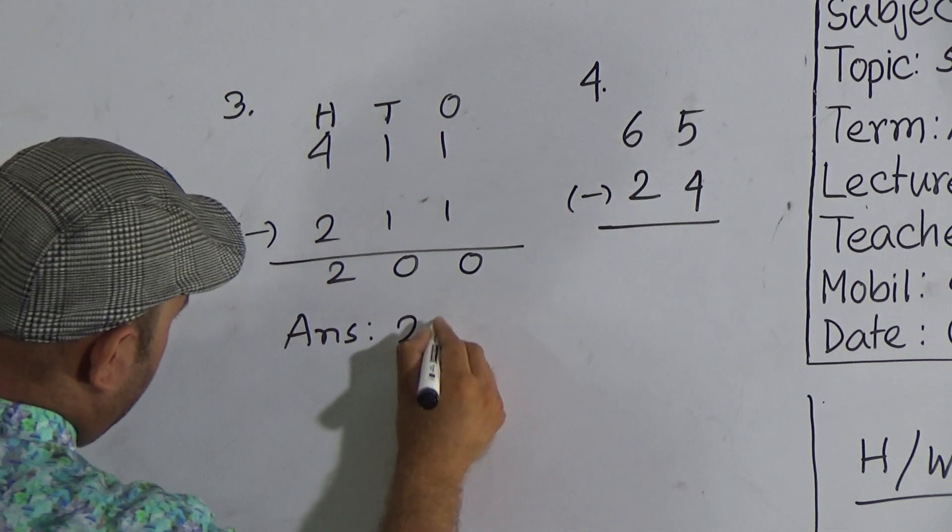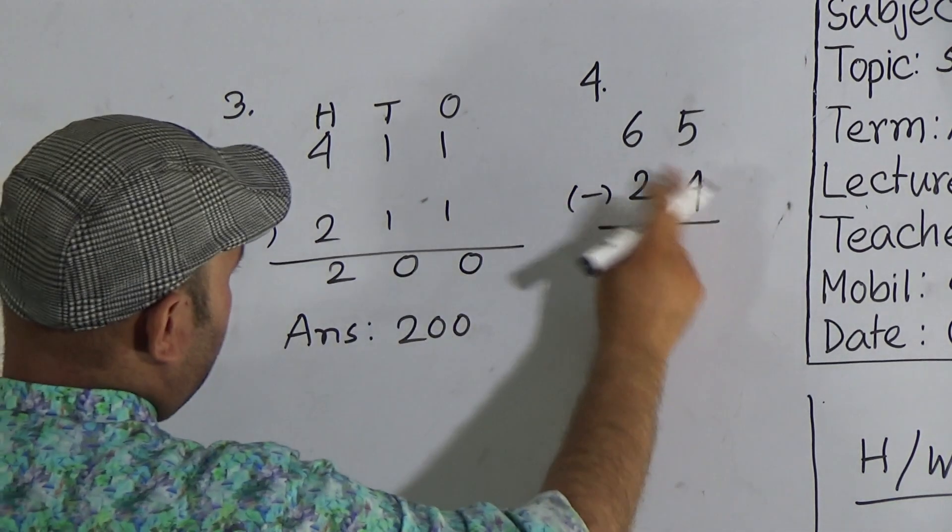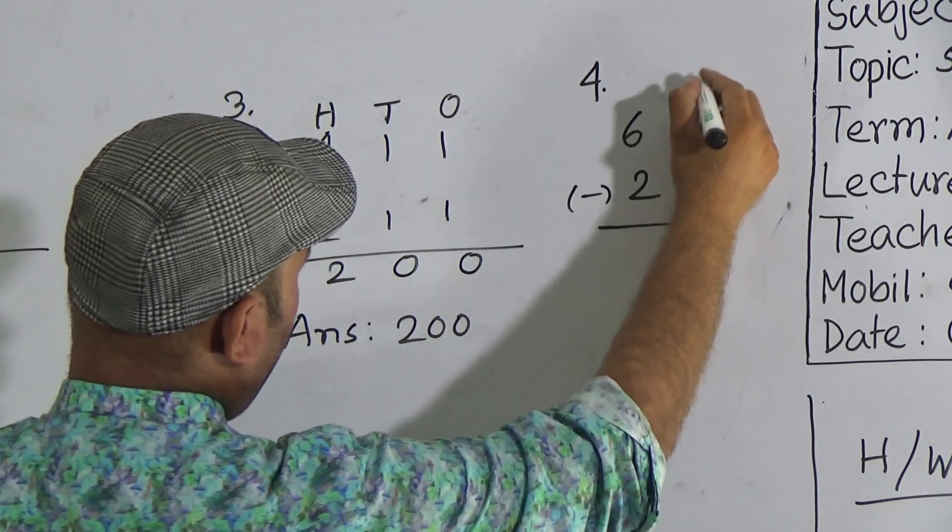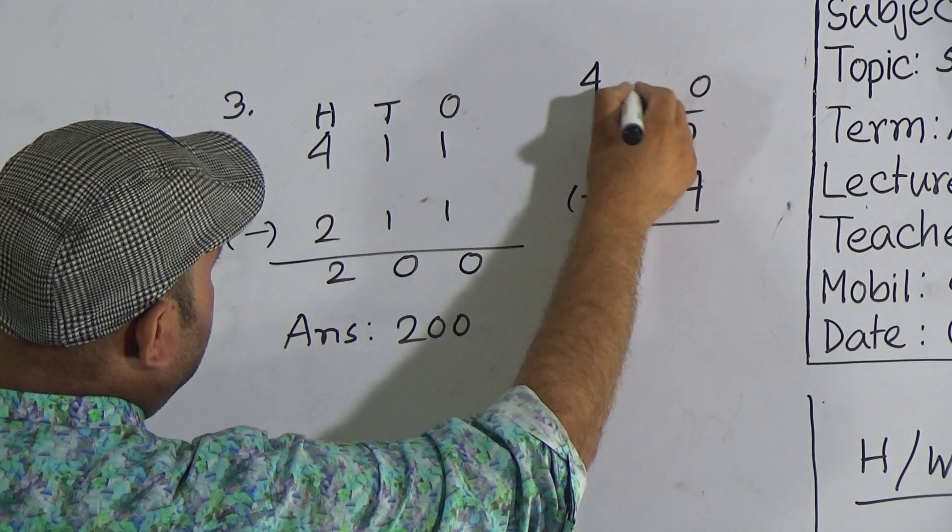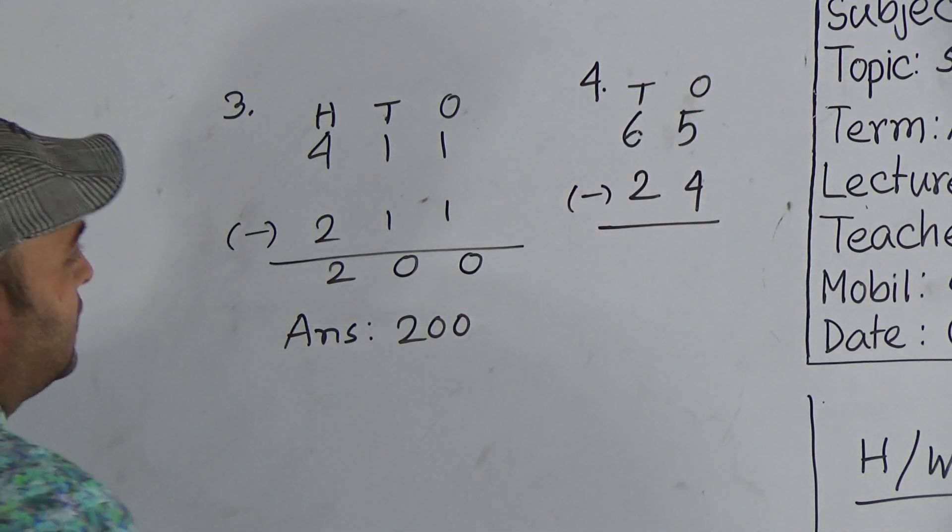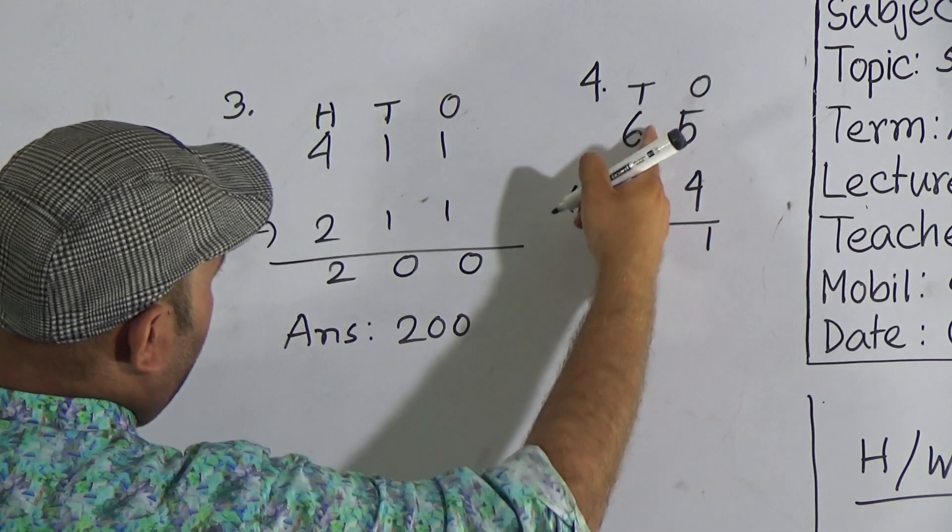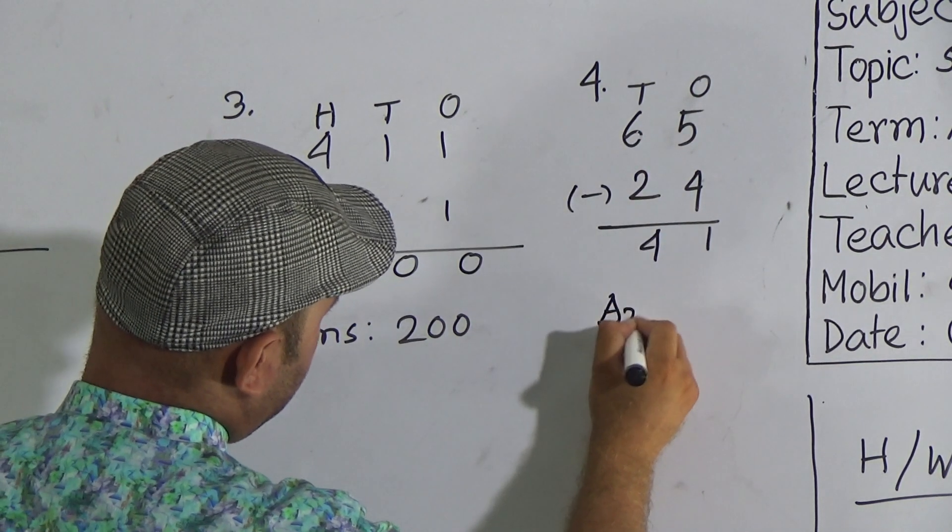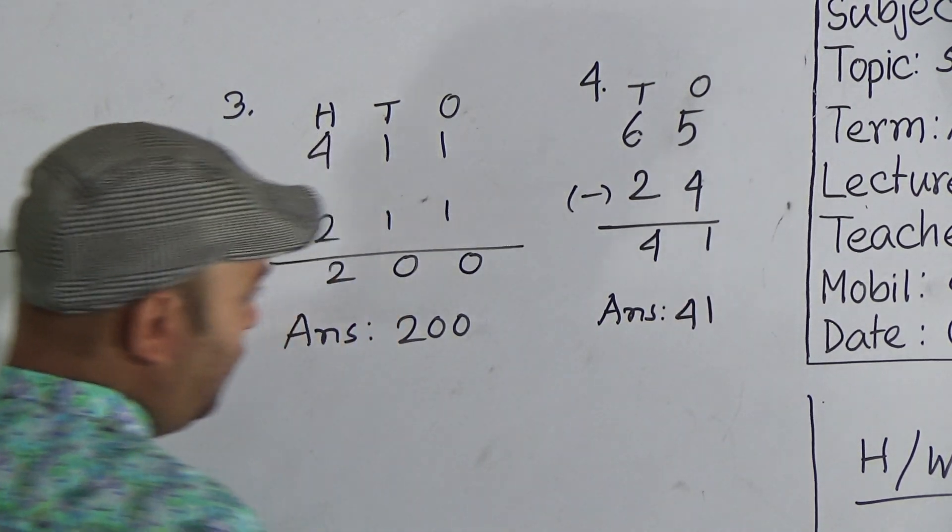Look here, here is the last one: 65 and 24. 5 and 4 are ones place digits, 6 and 2 are tens place digits. Now subtract 4 from 5, it will be 1. 2 from 6 is 4. So the correct answer is 41.